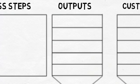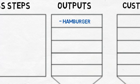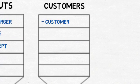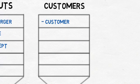Begin by brainstorming process outputs: the hamburger, change, and a receipt. Next, determine the customer or customers involved in the process. In this situation, we say the customer is the person or groups receiving the outputs of the process.